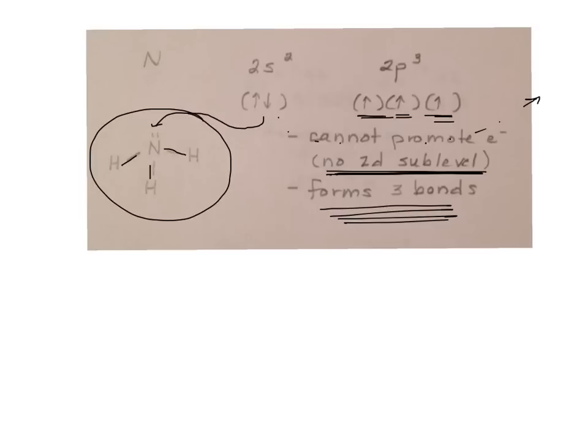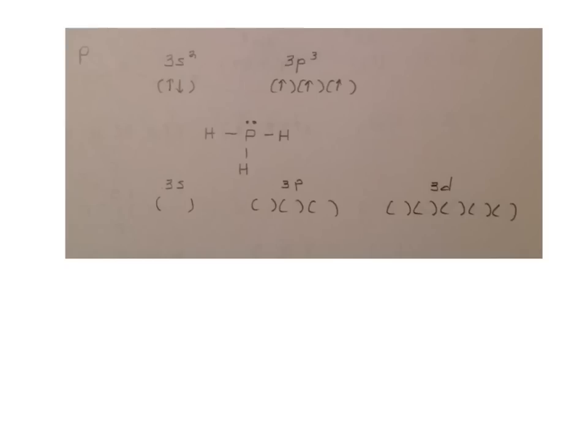But let's look at phosphorus, which is in the same group as nitrogen. Instead of 2s2, 2p3, it's 3s2, 3p3. So just like nitrogen, it can form three bonds and has a lone pair.